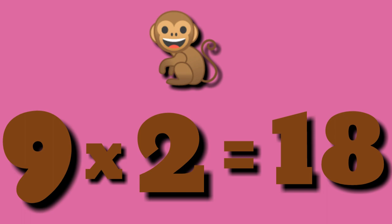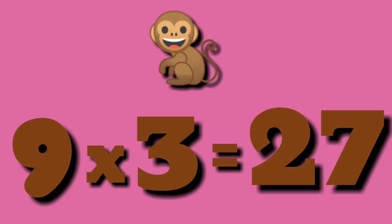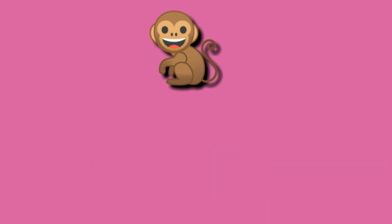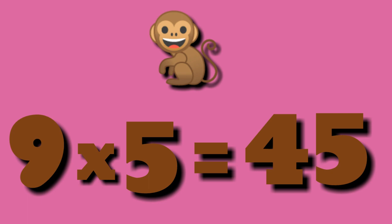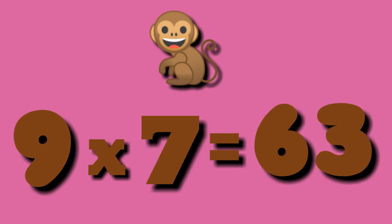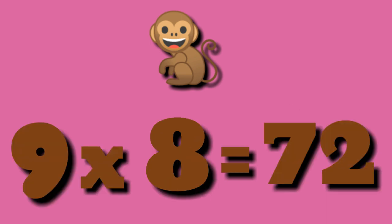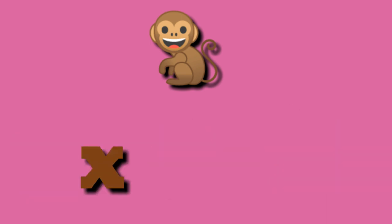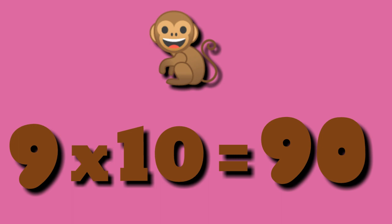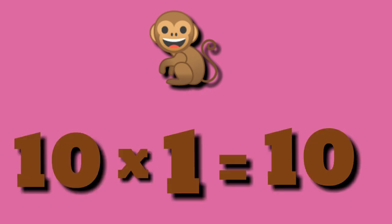Table of 9. 9 ones are 9, 9 twos are 18, 9 threes are 27, 9 fours are 36, 9 fives are 45, 9 sixes are 54, 9 sevens are 63, 9 eights are 72, 9 nines are 81, 9 tens are 90.